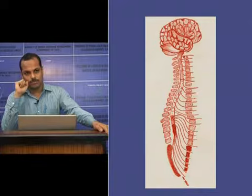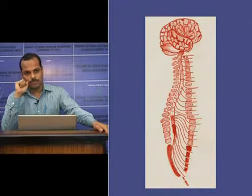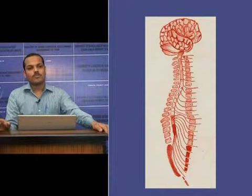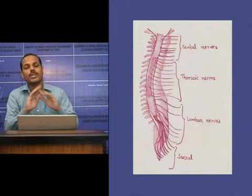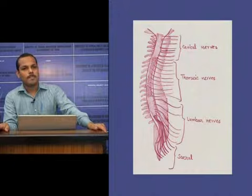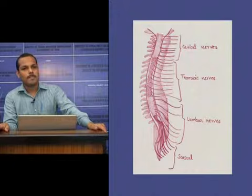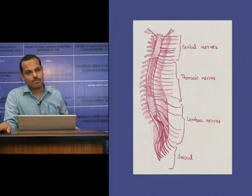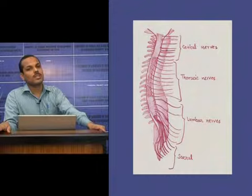The spinal cord gives rise to 31 pairs of spinal nerves. It comes down and at the lower level its lower part becomes conical shaped — this part is called the conus medullaris. The apex of the conical part continues as the filum terminale. The cord also presents two thickenings: the cervical and lumbar enlargements, where large nerves to the limbs arise.